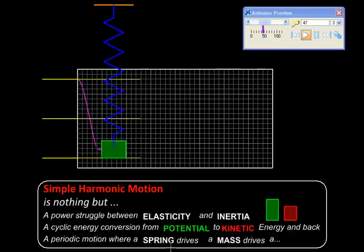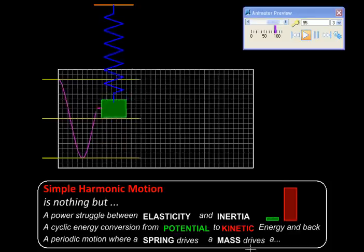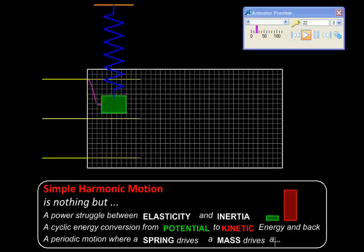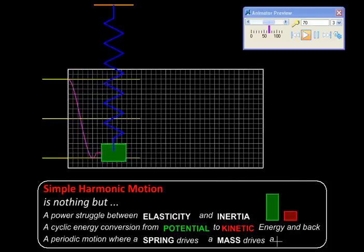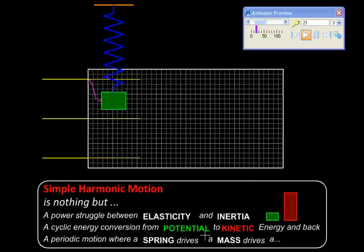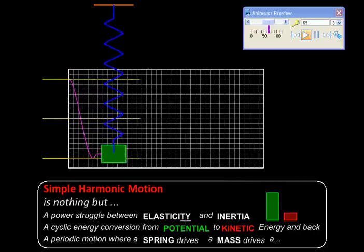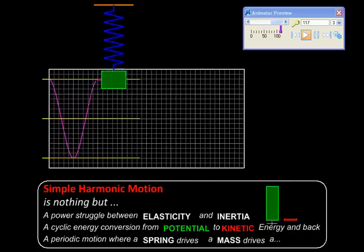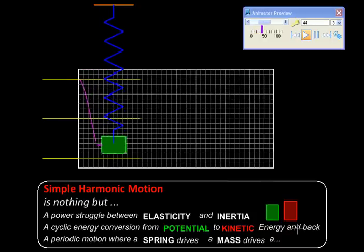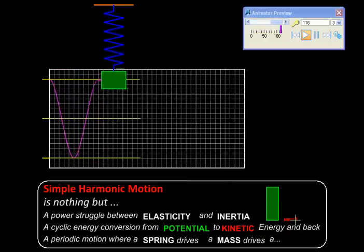So first it is the spring driving the mass, and then it is the mass driving the spring, and so on. Another way of looking at it: it is interconversion between the potential energy of the system to kinetic energy of the system, and back and forth cyclically.